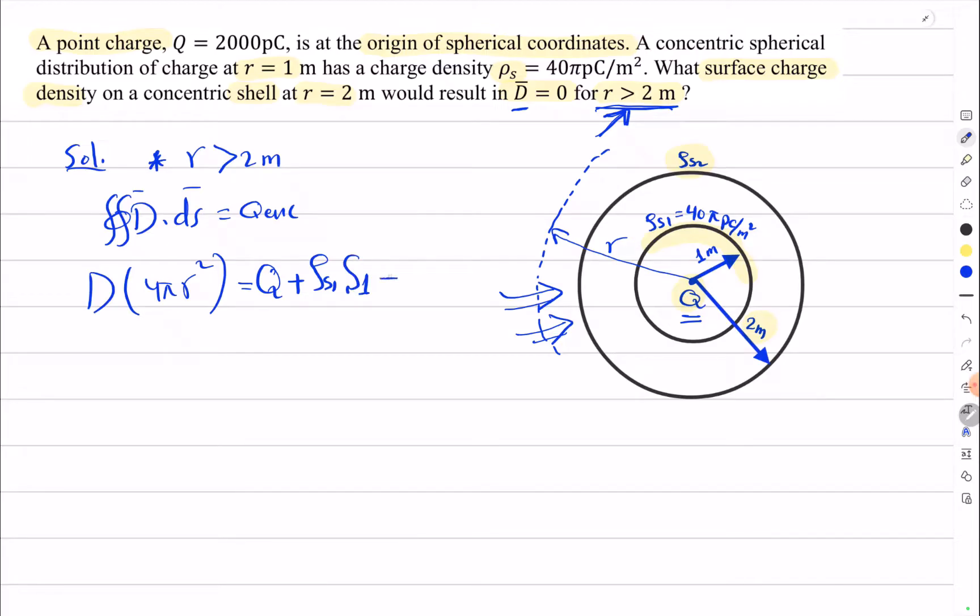We also have ρ_s2 on the two meter shell. We need to multiply it by the surface area S2 of this shell.